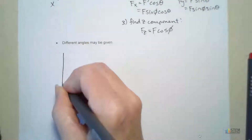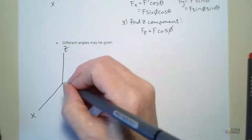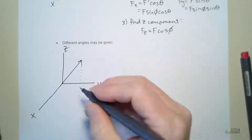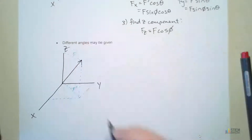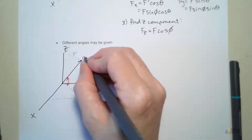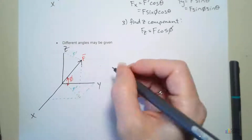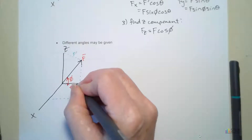For this one, let's draw the 3D system and go ahead and draw the force and put our dashed lines. It's easier to put this dashed line in the middle — remember, this is like F prime — and then we also have a dashed line here, that's F prime also. Now for this one, let's say we have this angle from the force down to this dashed line right here in the middle — let's say this one is phi. And now we're given the angle from the Y axis to this F prime line, and that is going to be theta.